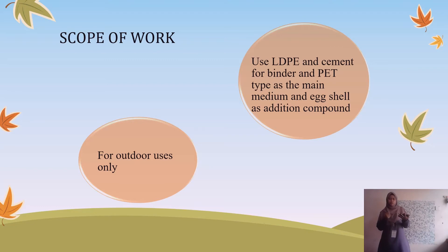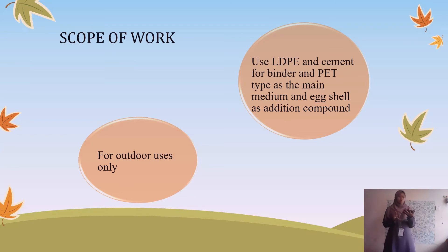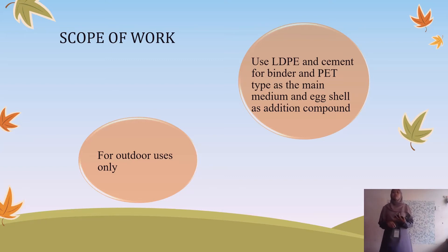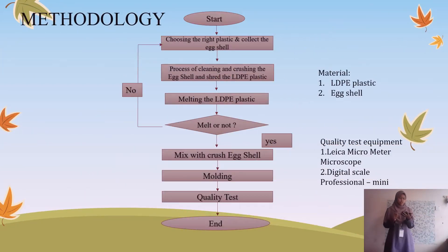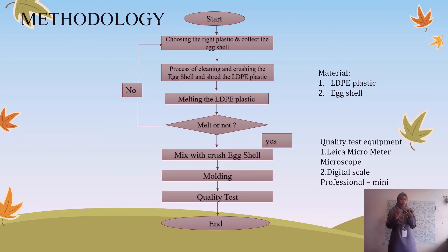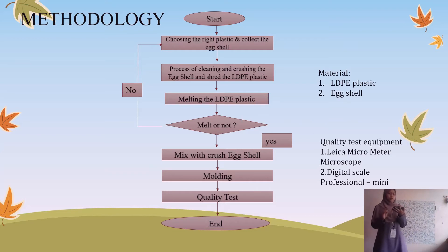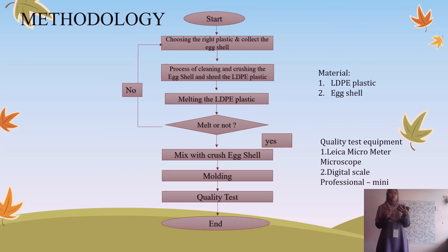I'm going to present about scope of work. Number one, for outdoor users only. Number two, use LDPE and cement as the addition, and PET type as the main medium, with egg shell as the additional compound. For methodology, we start by choosing the right plastic and collecting the egg shell. Then, process of cleaning and crushing the egg shell and checking the LDPE plastic. Then, melting the LDPE plastic, mixing with crushed egg shell when melted, molding, and proceeding to quality testing.